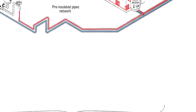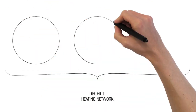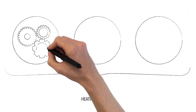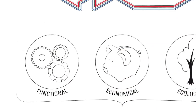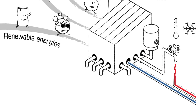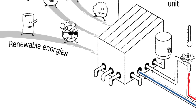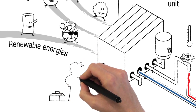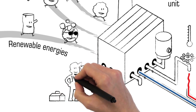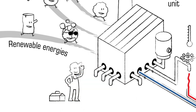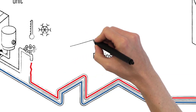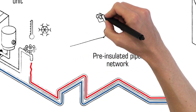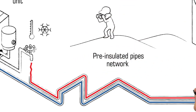The heat network adds functional, economical and ecological advantages. Functional advantages: its installation and maintenance are made very easy. For example, the network is equipped with a leak detection system that helps to accurately locate potential damages.